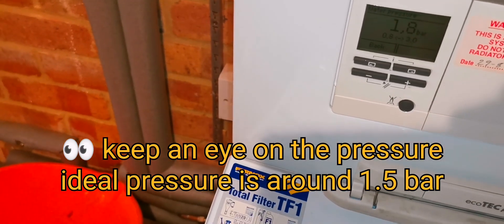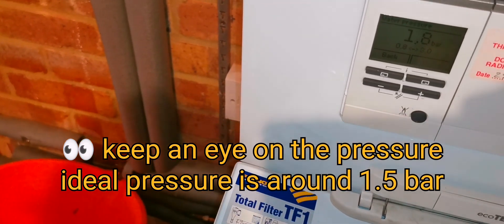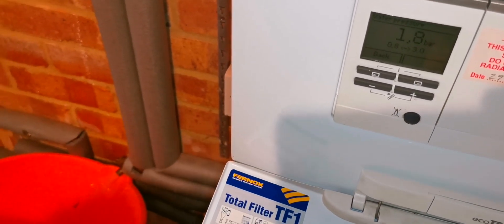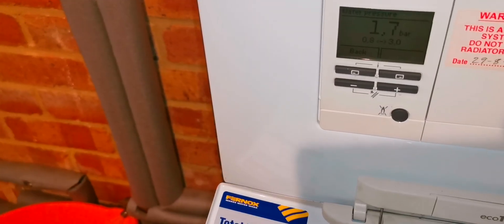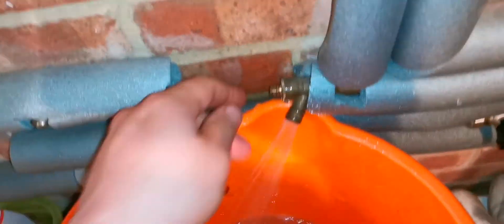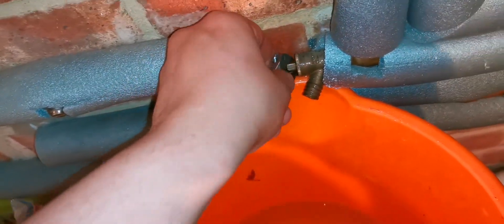You might have a separate pressure gauge you want to keep an eye on. You don't want it going below one bar, but ideally you want it around 1.5 bars or in the green if you have a gauge.